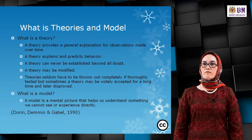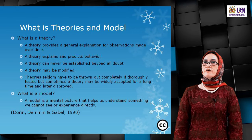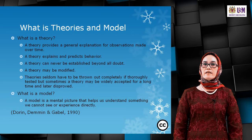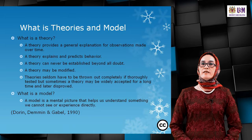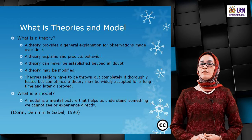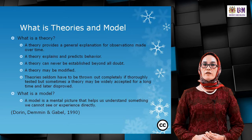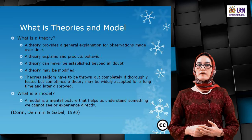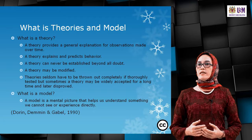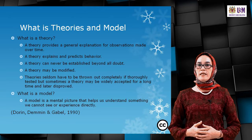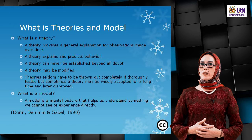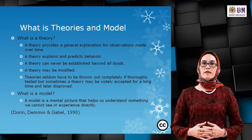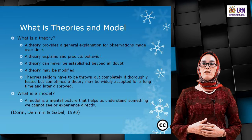What is a theory and what is a model? A theory provides a general explanation of observations made over time, explains and predicts behaviour, can never be established beyond all doubt, and may be modified or even thrown out if thoroughly tested. A model is a mental picture that helps us understand something we cannot see or experience directly.